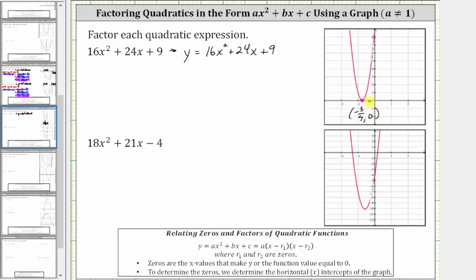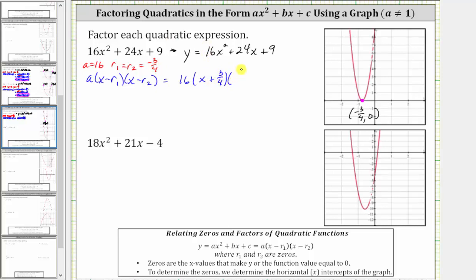Because of the behavior of the graph, we let r sub one and r sub two equal negative 3 fourths. To write the given expression in the form a times the quantity x minus r sub one times the quantity x minus r sub two, we know that a, the coefficient of x squared, is 16, and r sub one equals r sub two equals negative 3 fourths. Performing the substitution gives us 16 times the quantity x minus negative 3 fourths, which simplifies to x plus 3 fourths, times another x plus 3 fourths.